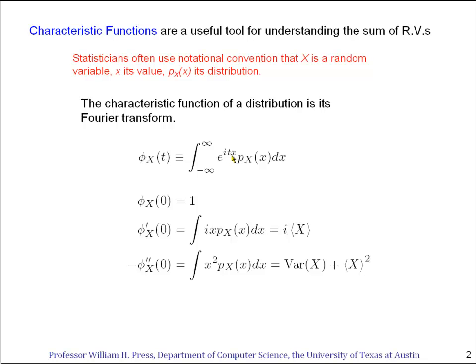But now we're going to set t equals zero, so it's going to be just an integral of i x times p_X(x) dx, and you can see except for this i, that's simply the first moment or mean of the random variable x.